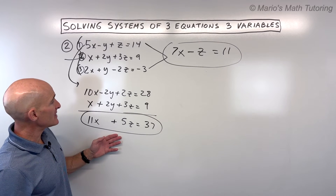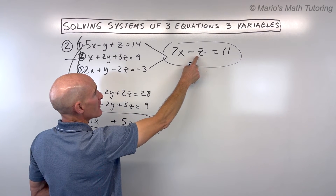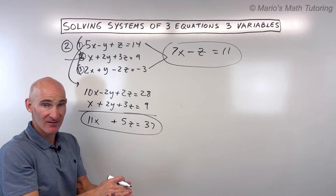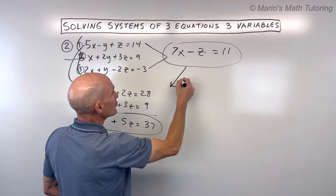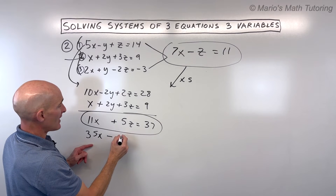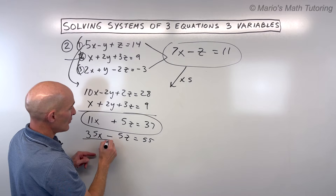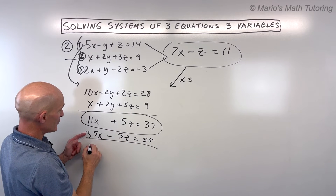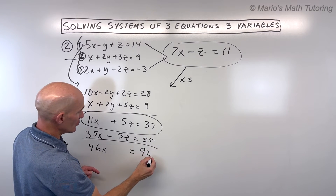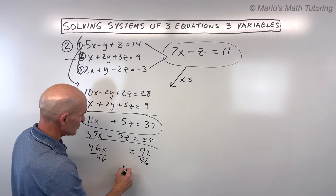I think the easiest thing to work with now would be the z's. All I have to do is multiply the equation 7x minus z equals 11 by 5. That'll give us negative 5z; adding to 11x plus 5z equals 37, they cancel out. So: 35x minus 5z equals 55, adding to 11x plus 5z equals 37 gives 46x equals 92. Dividing both sides by 46, x equals 2.